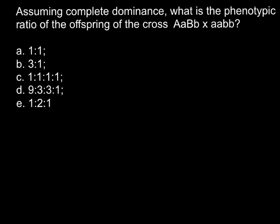I want to start with the different combinations that are possible when we cross these two parents. I'll use an extensive number of genotypes so you know how to solve analogous problems with different combinations of alleles. Let's assume that capital A stands for red color, small a stands for white color, capital B stands for large size, and small b stands for small size.